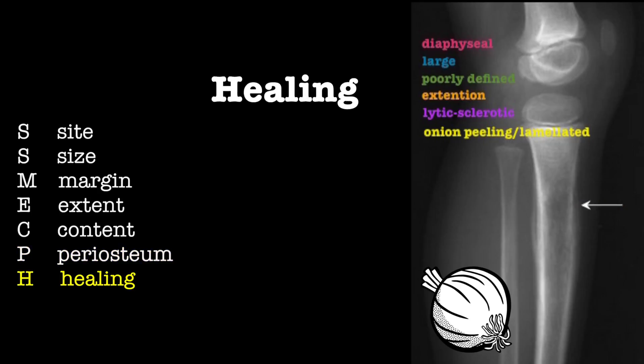H is for healing. Sclerosis and healing of pathological fractures suggest that there is a host response, and therefore indicates a benign process. This is not seen in the above x-ray.